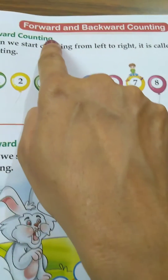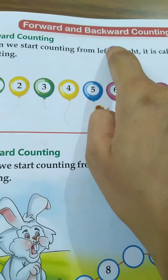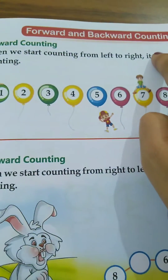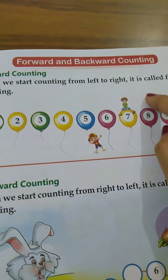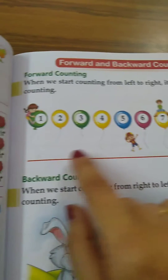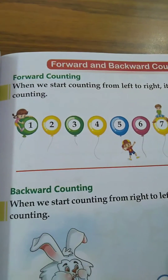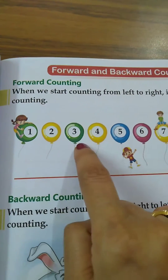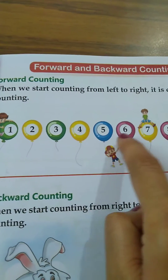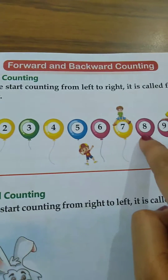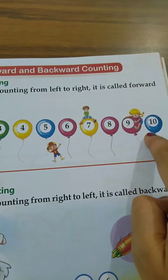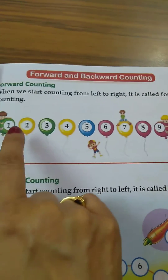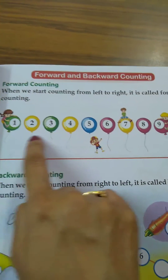Forward and backward counting. Okay, we will do it again. 1, 2, 3, 4, 5, 6, 7, 8, 9, 10 — that is forward counting.